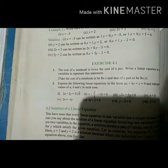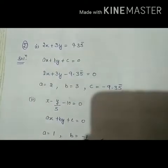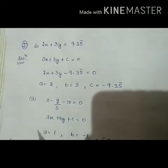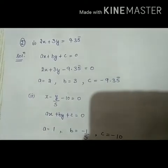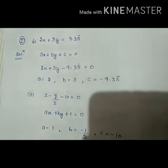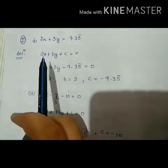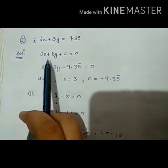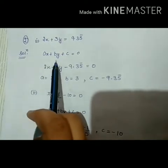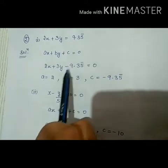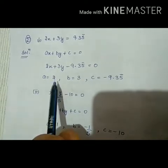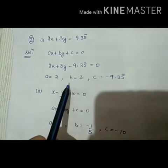I will work out one or two parts for you; the rest you should try on your own. Let's start with the first part: 2x plus 3y is equal to 9.35. We compare this with the standard equation ax plus by plus c is equal to 0. Here x and y are our variables. Comparing terms: a is equal to 2, b is equal to 3, and since the sign here is plus but in standard form it is minus, c is equal to minus 9.35.